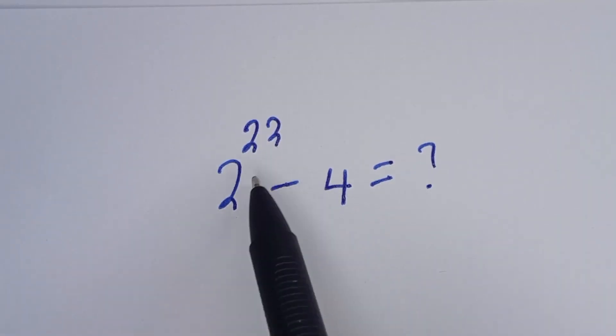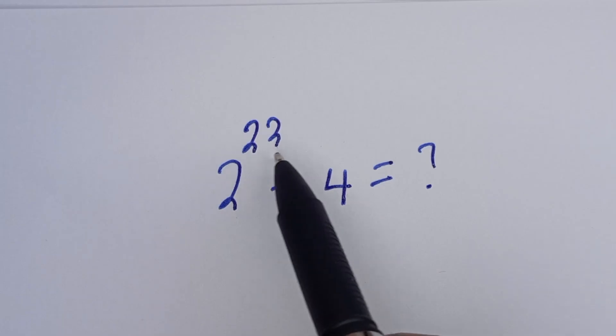Hello, how to simplify this nice math problem: 2 to the power of 22 minus 4.